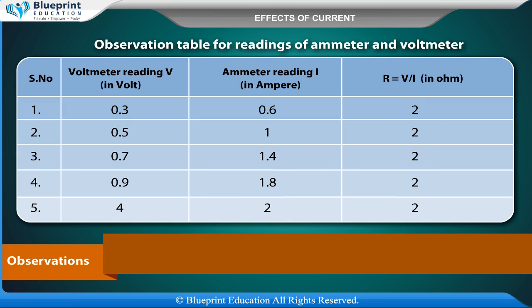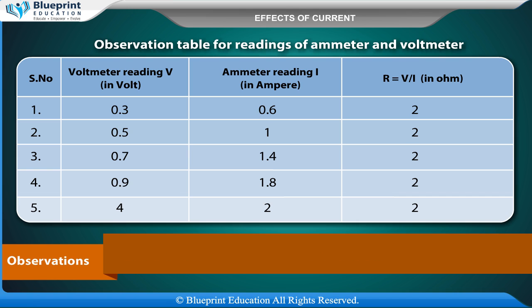Least count of ammeter N is equal to Ra upon Na, which equals x ampere. Observation table for readings of ammeter and voltmeter: voltmeter reading V in volt, ammeter reading I in ampere, R is equal to V upon I in ohm. Mean value of R is equal to R1 plus R2 plus R3 plus R4 plus R5 divided by 5, which equals x ohm.